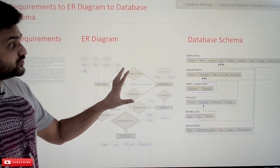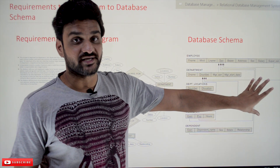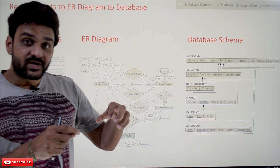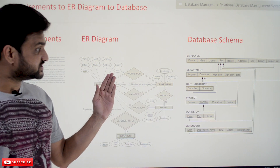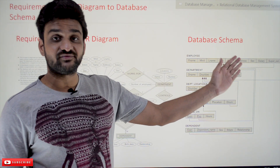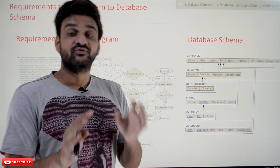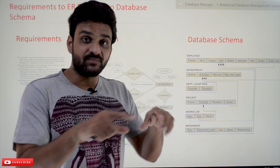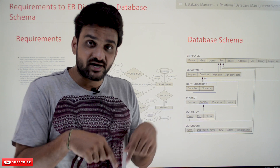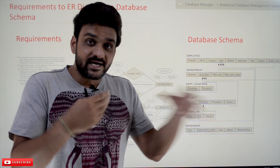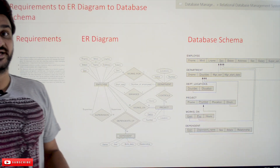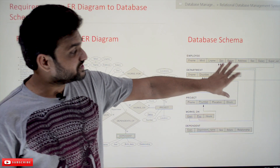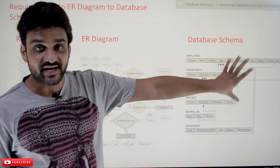Now this blueprint is provided to the constructor. What will the constructor do — seeing this diagram, will he directly construct the house? No. First he will do the marking of each and every room, the marking of the entire house, and later the construction will start. In the same way, this ER diagram is converted into a database schema — this is just like that marking.